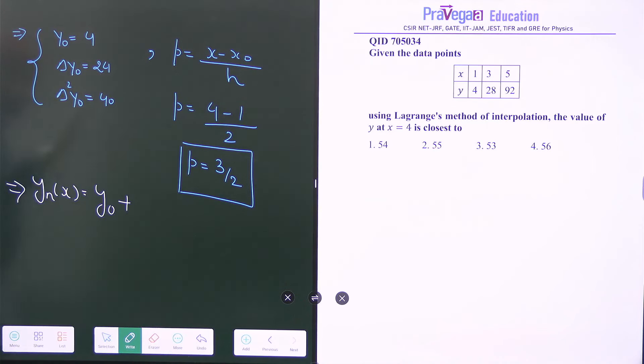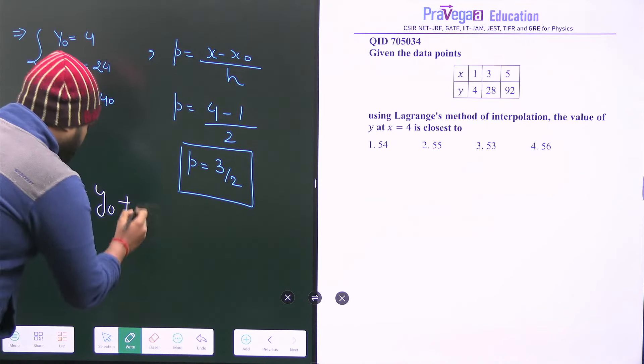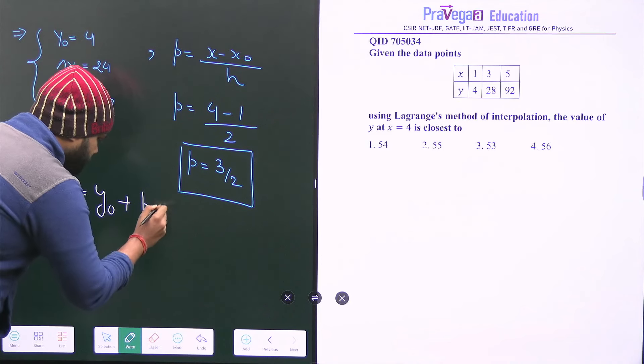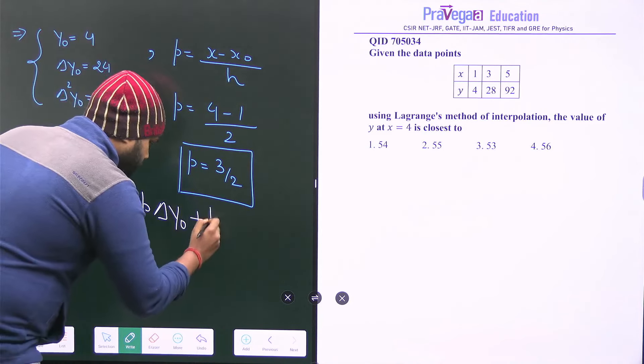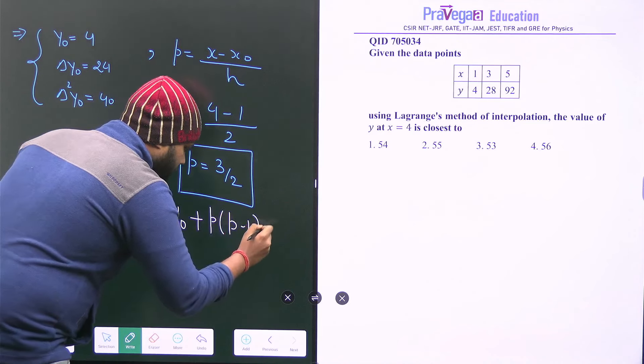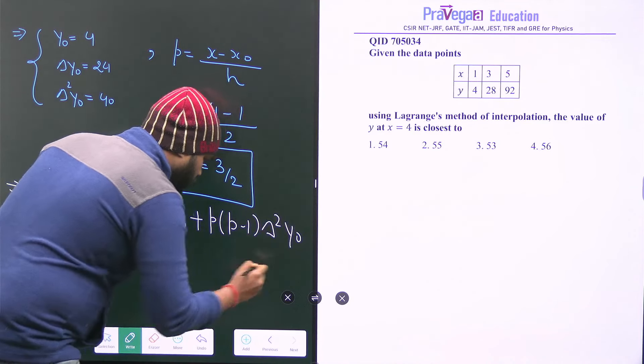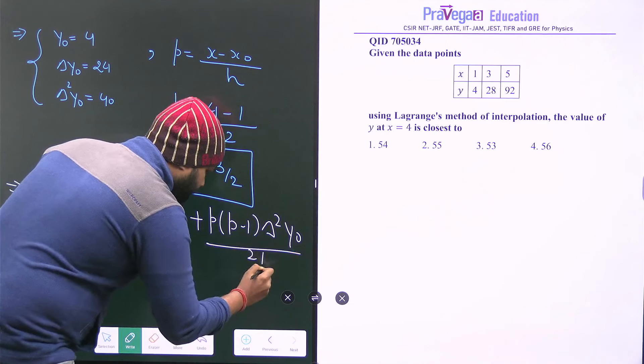This is y0 plus P times delta y0, plus P times P minus 1 delta square y0, and this is divided by 2 factorial.